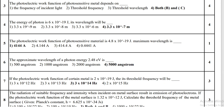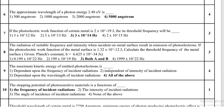The energy of a photon is 6 × 10⁻¹⁹ joule; its wavelength will be 3.3 × 10⁻⁷ meter. The photoelectric work function of a photosensitive material is 4.8 × 10⁻¹⁹ joule; the maximum wavelength is 4144 angstrom.